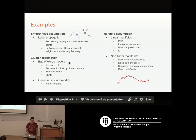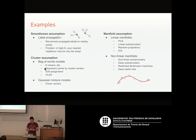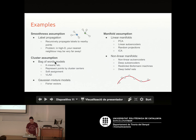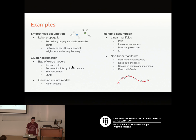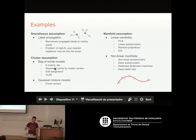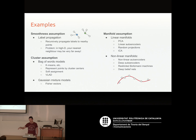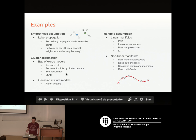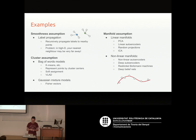The cluster assumption appears in things like Bag of Words models, for example using K-means to represent points by cluster centers and computing a histogram. This has been very successful in computer vision using SIFT and Bag of Words — it's an unsupervised learning step followed by a supervised learning step, and knowing about the distribution of the data helps classification. Gaussian mixture models also fall under this paradigm, assuming the data is clustered into Gaussians and looking at first and second order statistics.